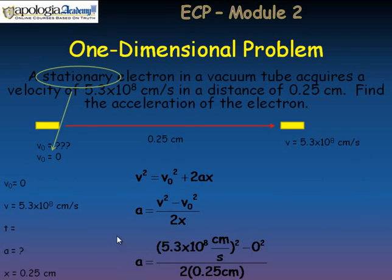So 5.3 times 10 to the 8th squared divided by 2 and 0.25 centimeters. You can do all of this without rounding to significant figures until the end. And your final answer should be 5.6 times 10 to the 17th centimeters per second squared.